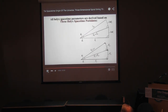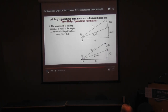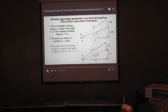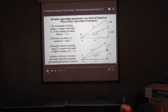All helix spacetime parameters are derived based on three helix spacetime postures. First, the wavelength of the trailing stream lambda-2 is equal to the length L1 of one winding of the leading stream. Second, the helix inner radius R0 is constant. And third, the spiral velocity of the trailing stream B2 is equal to the speed of light C. Similar to the Torex, these three helix spacetime postures yield amazing properties of helices.